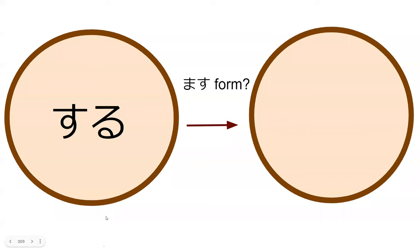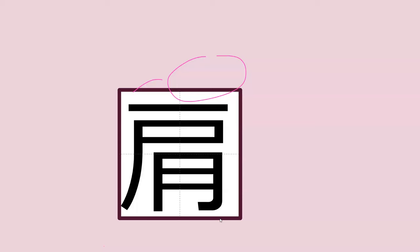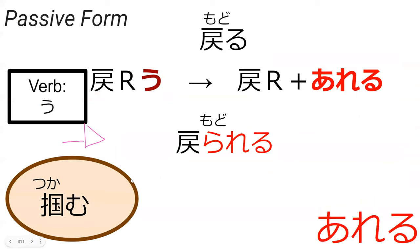What is the masu form of suru? Shimasu. Perfect — shimasu. So this word right here is a part of the body; do you happen to know this kanji? This is the shoulder, yes — kata. Perfect, kata.